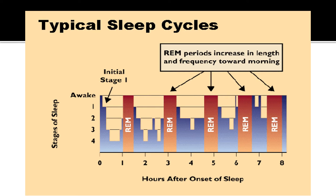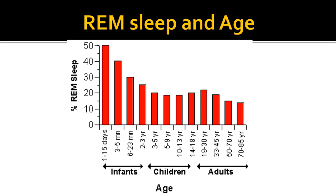In a typical night's sleep, REM periods increase in length and frequency as sleep progresses. A graph shows the proportion of REM sleep according to age: in newborns, REM sleep accounts for more than 50% of total sleep, whereas in adults it is less than 25%, and even less in the elderly.